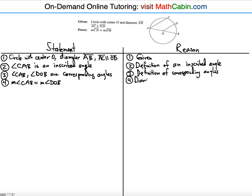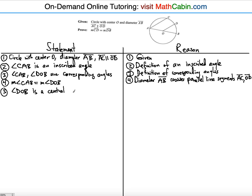We can state it as: diameter AB crosses parallel line segments AC and OD. Notice that angle DOB is a central angle because O is the center of the circle. Whenever the vertex of an angle is at the center of the circle, you have a central angle, so the reason is the definition of a central angle.